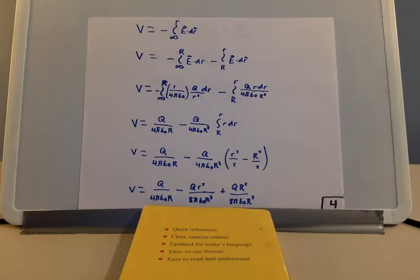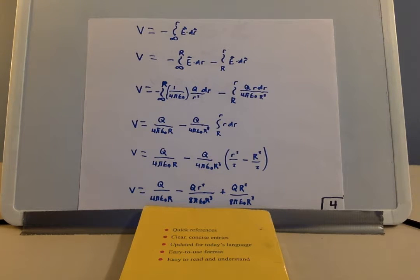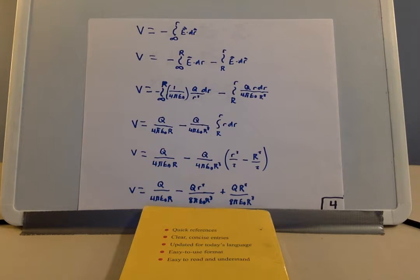Now to start off the big step: the calculations. The electric potential is equal to the negative of the integral from infinity to r of the electric field times dr. To calculate this, we need to break it up into two sections. One is the negative of the integral from infinity to big R — going from a point infinitely far away to the radius of the whole sphere — of E dr. Then we subtract the integral from big R to little r — the radius of the point within the sphere — of E dr as well.